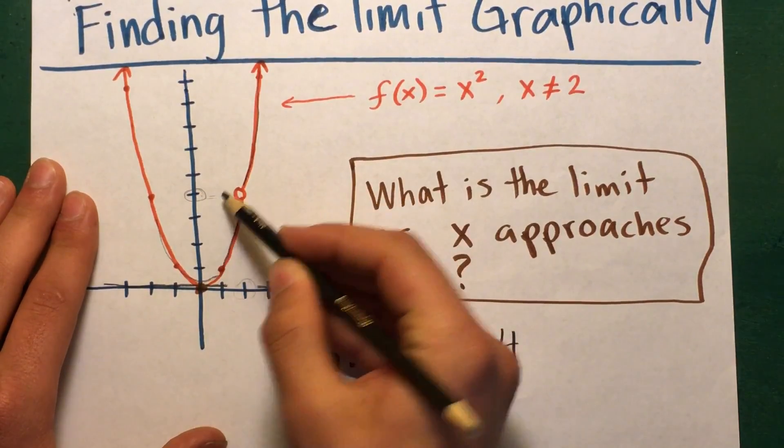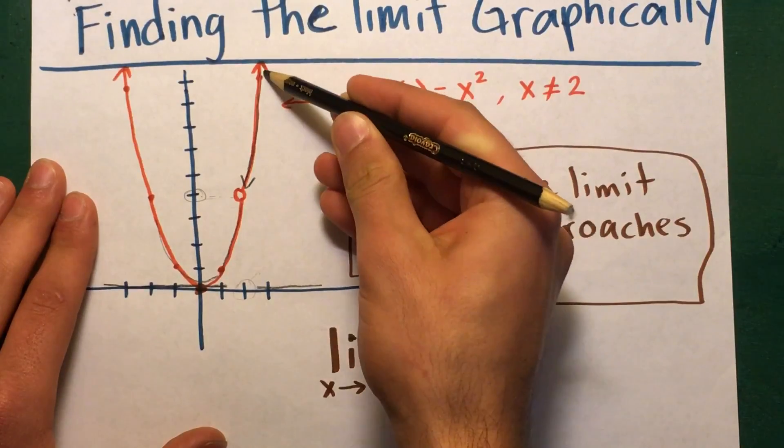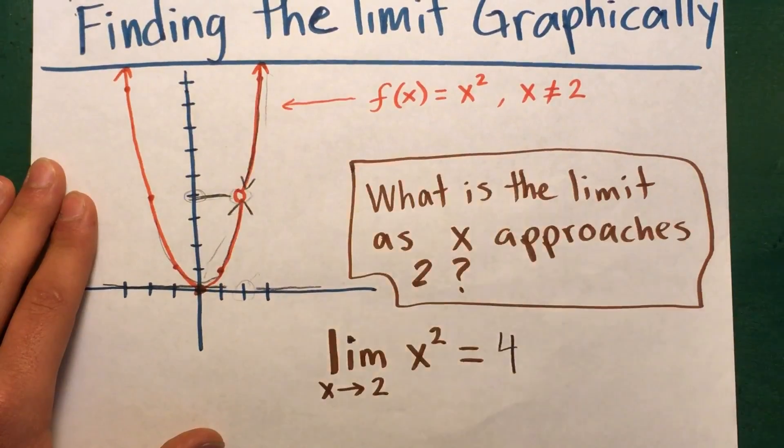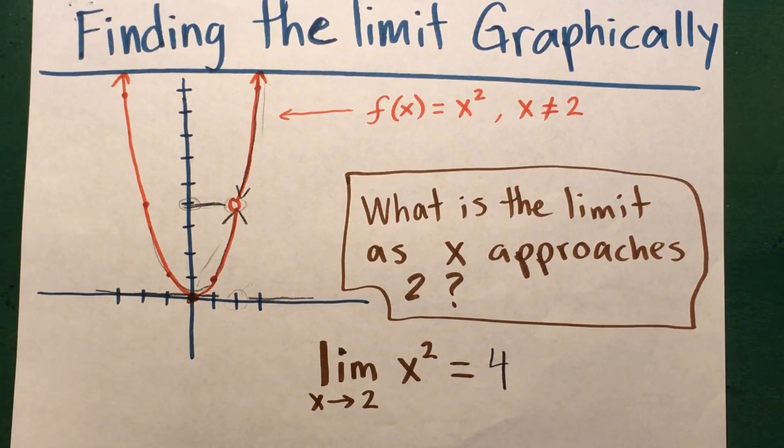All you have to do is just look at the graph: what is the function approaching from this side and from this side? And what is the function approaching at the hole? It is 4 and that's how to find the limit of a function graphically.